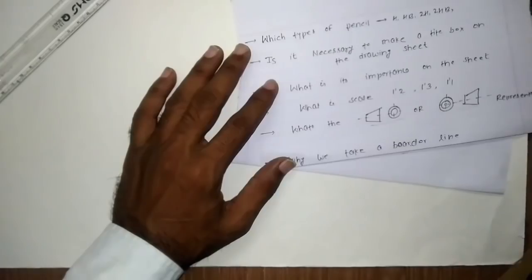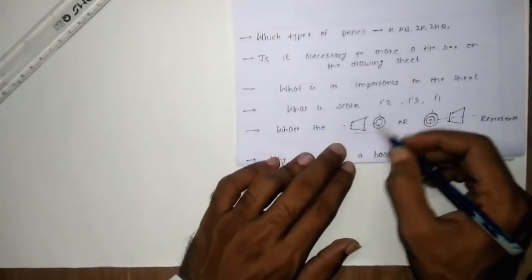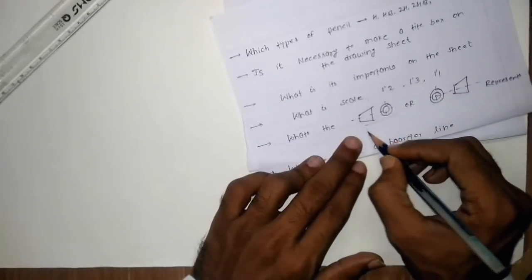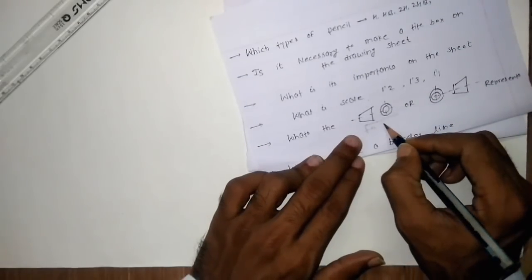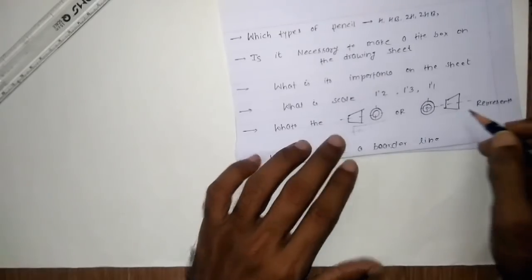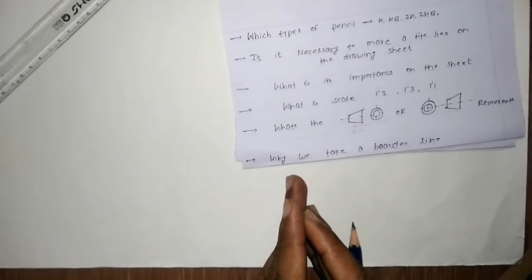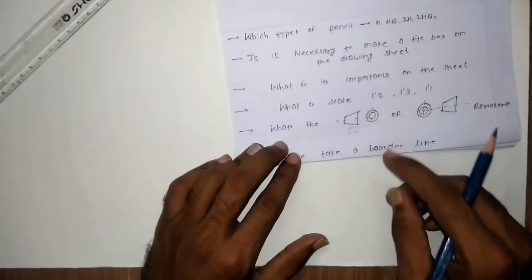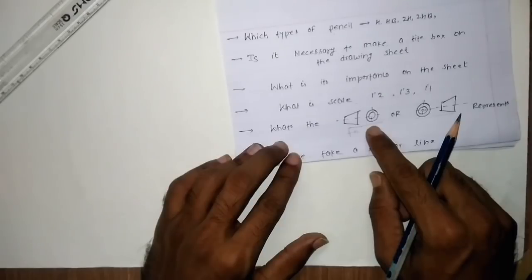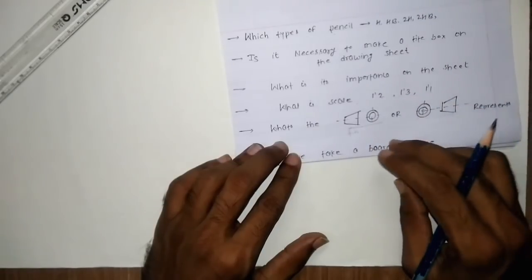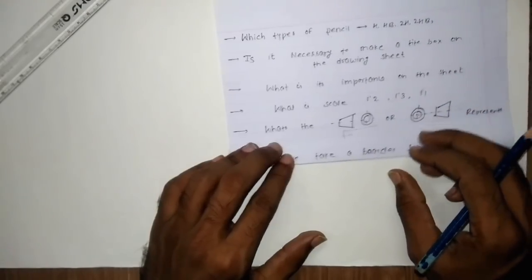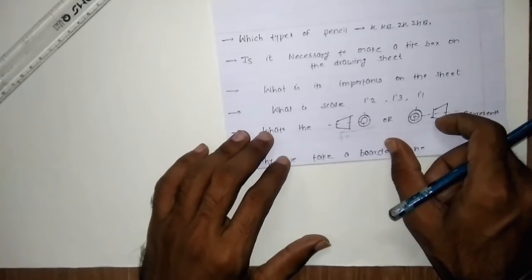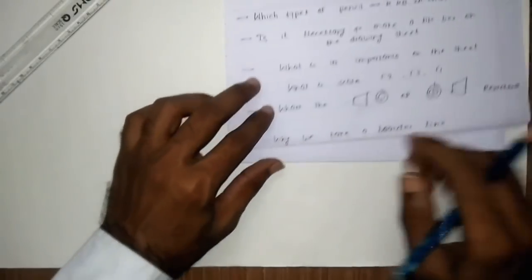The symbol on the title box represents either first-angle projection or third-angle projection. The meaning of first-angle projection and third-angle projection will be covered in our orthographic projection and isometric projection chapters, where we will discuss the front view, top view, and side view of an object. We will discuss this topic in further chapters.